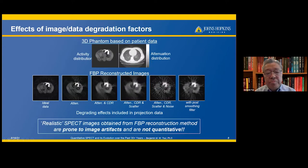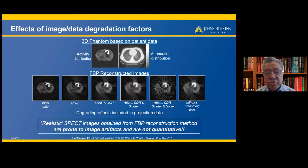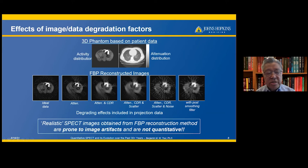The effect of image degradation factors severely affects the reconstructed image quality. Realistic SPECT images obtained from filter back projection reconstruction methods are prone to image artifacts and are not quantitative.